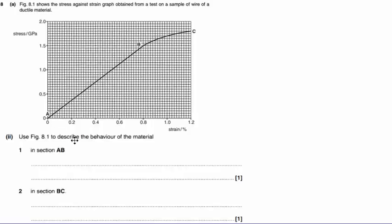Part 2 asks us to describe the behaviour of the material in these two sections here, from A to B and from B to C. Well, in A to B, we have a straight line which tells us that Hooke's Law is being obeyed. So we have elastic behaviour.